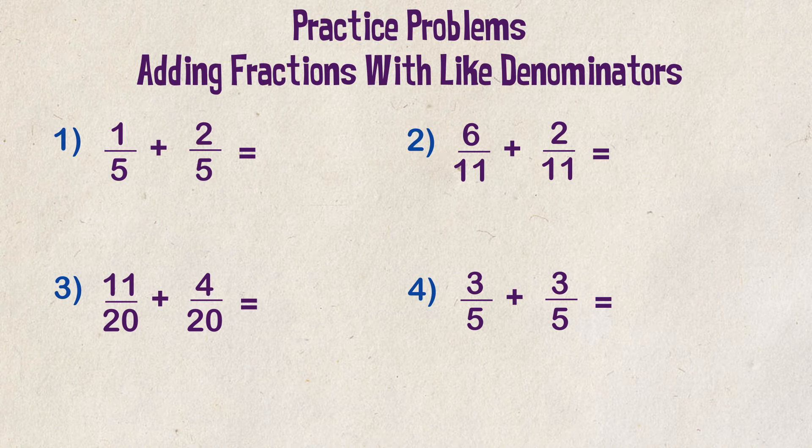Example one. One fifth plus two fifths. Add the numerators together and we get three. Put that over five and the answer is three fifths.